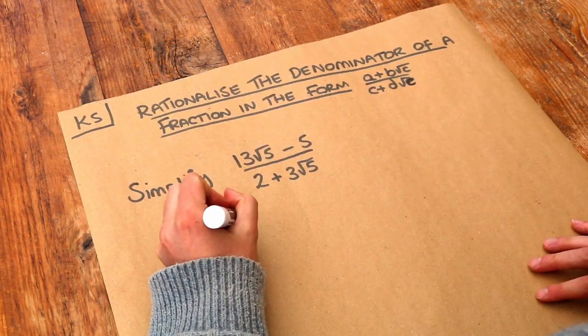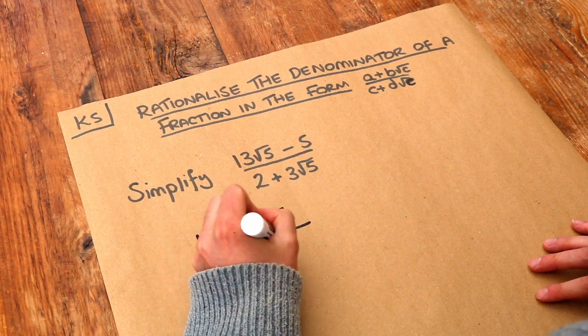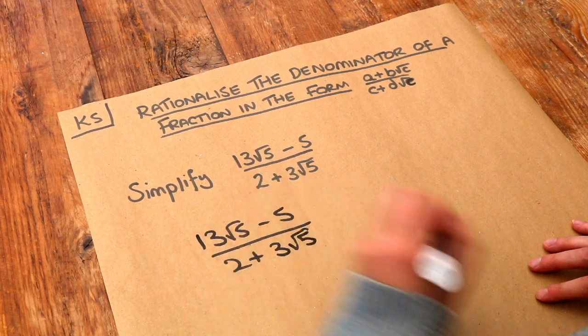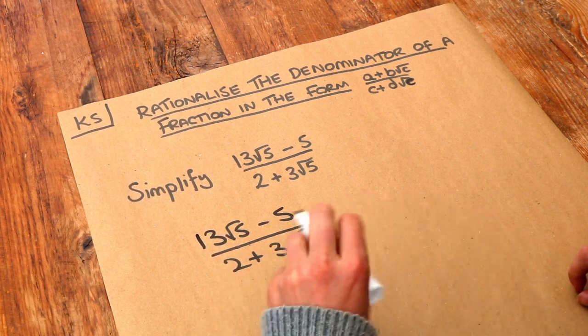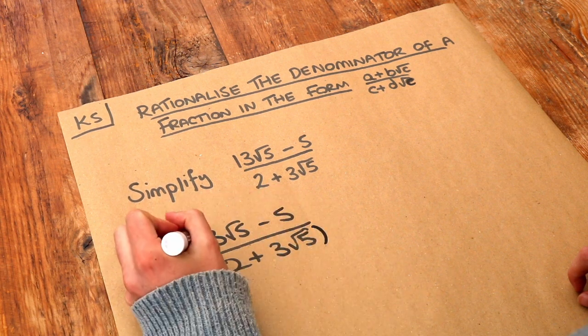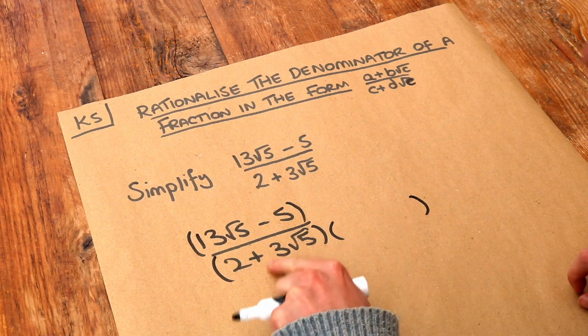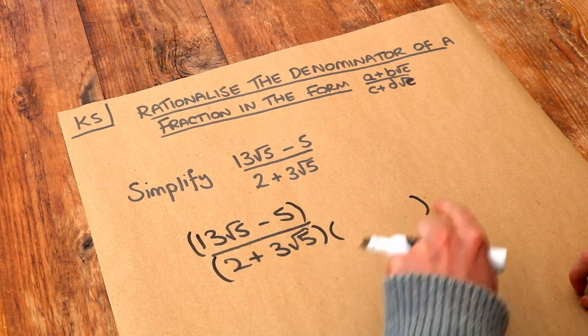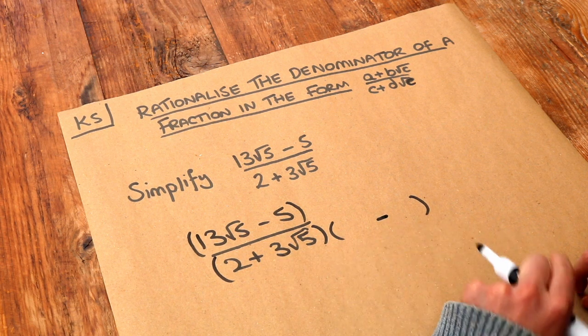And do you remember what we did? We just multiplied the top and bottom of this fraction by what's known as the conjugate of the denominator. So we look at the denominator and we basically put brackets around it first, and then we multiply it by the same but whatever the sign is in the middle we change it. So the plus becomes minus, and if it was a minus it would become a plus.